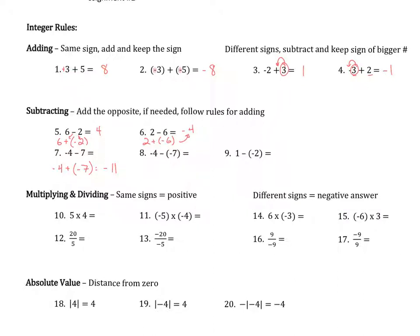I like these last two examples because students often get tripped up when subtracting a negative. Here we have negative 4 minus negative 7 — we add the opposite, so it becomes negative 4 plus 7. They have different signs, so we subtract: 7 minus 4 is 3, and take the sign of the larger number, which is positive, giving us positive 3. For the last one, add the opposite: the opposite of negative 2 is positive 2, and the answer is 3.